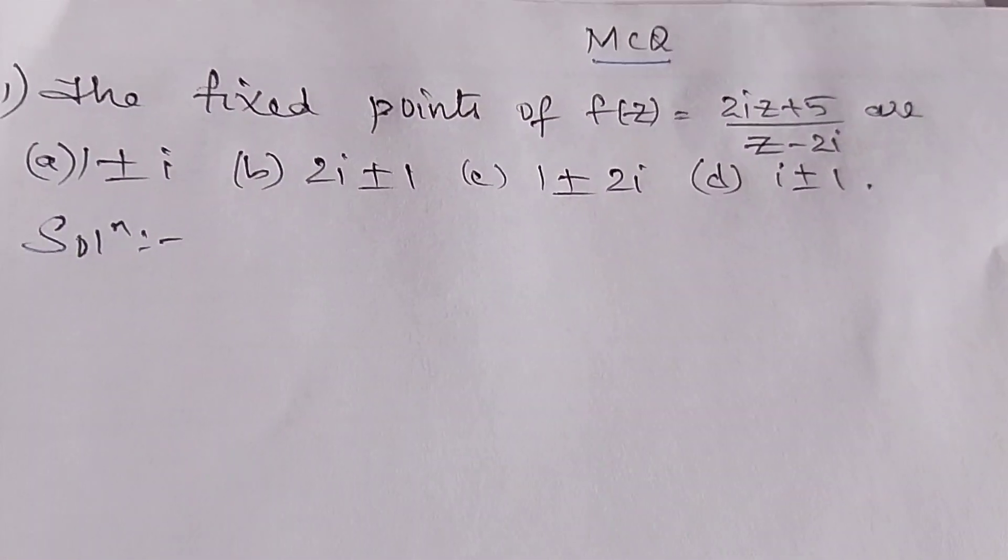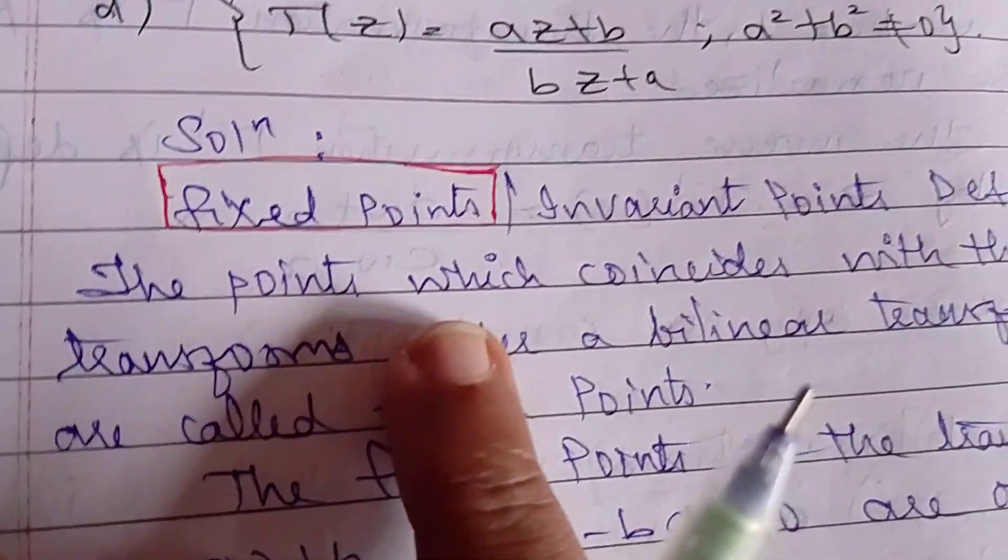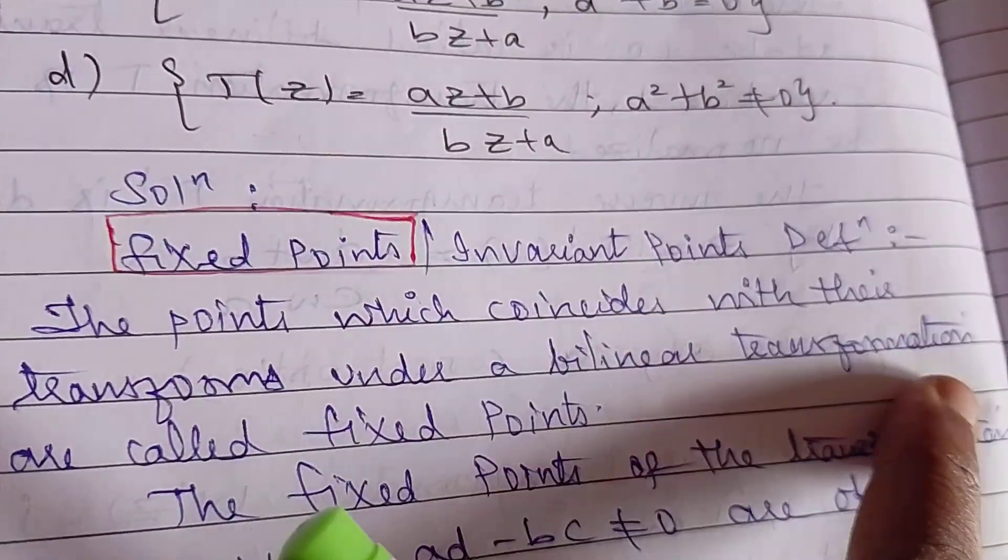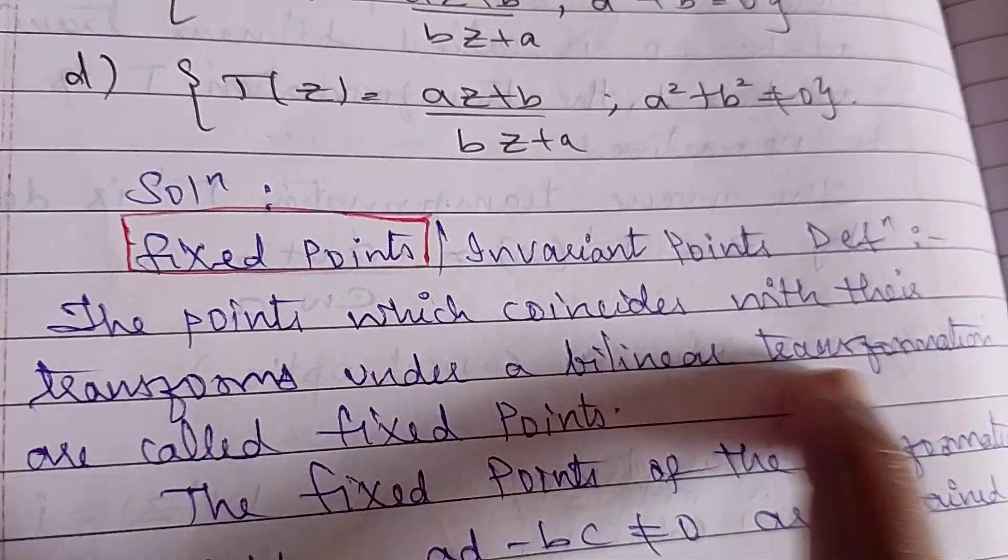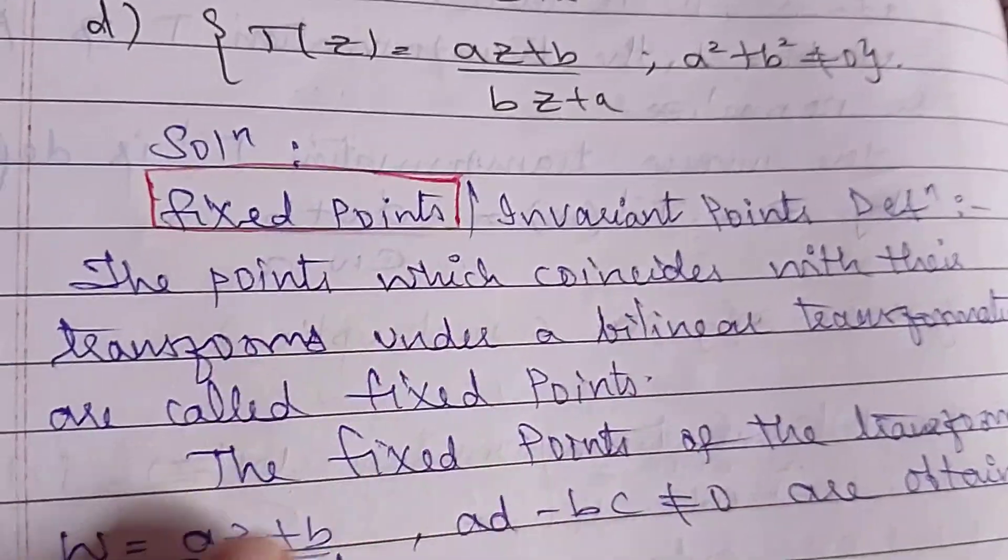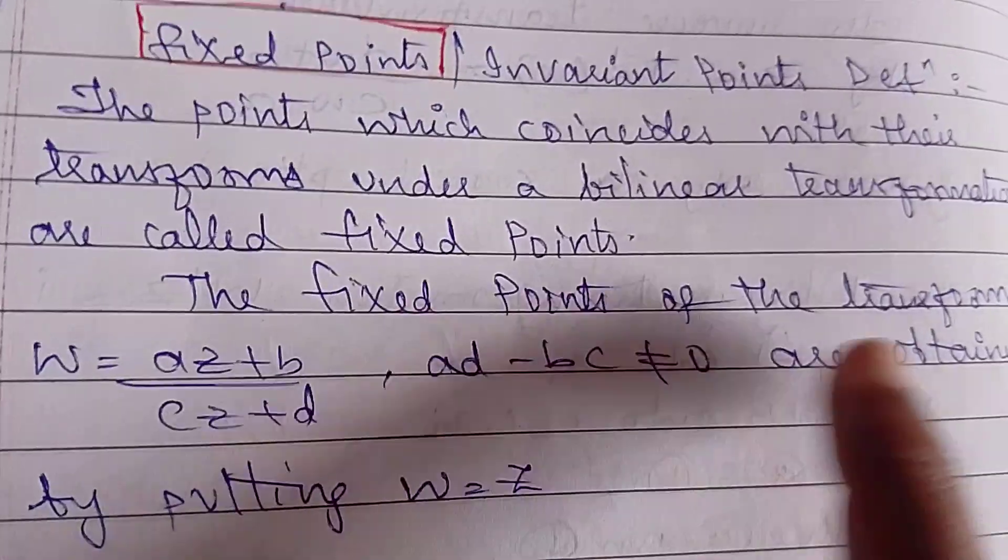In order to find this, we should know what fixed points are. First, let us learn what fixed points are. Fixed points are also called invariant points. These are points which coincide with their transforms under a bilinear transformation.